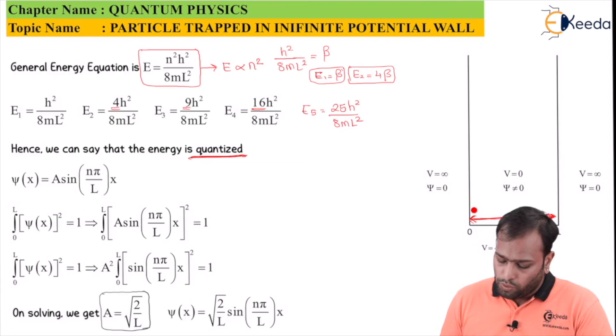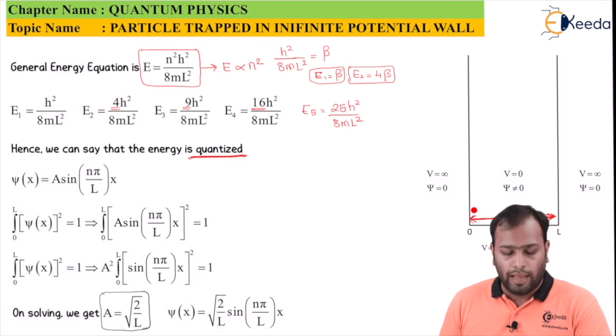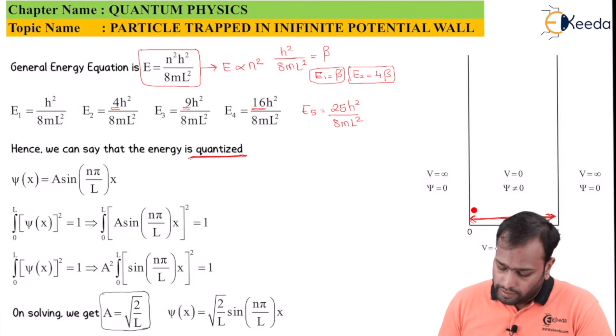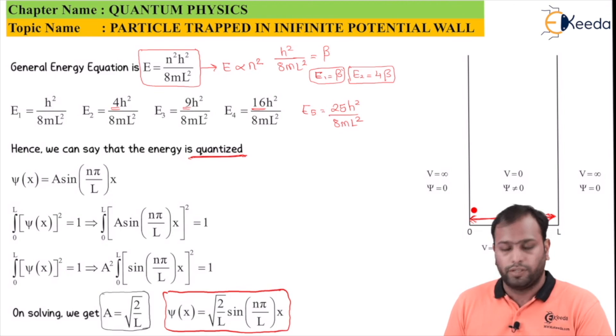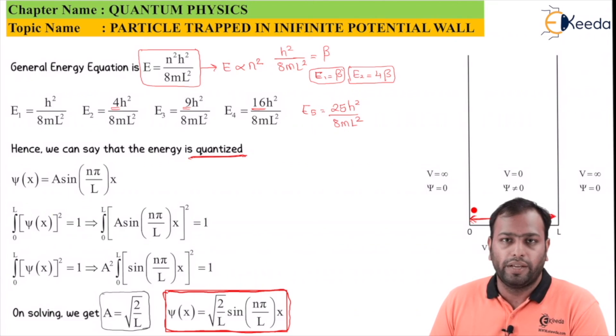Therefore, the final normalized wave function is ψ(x) = √(2/L) · sin(nπx/L). This is the wave function for the particle in a box, and this is the final step of the derivation. Thank you so much for watching. Stay tuned and subscribe to Ikeda.